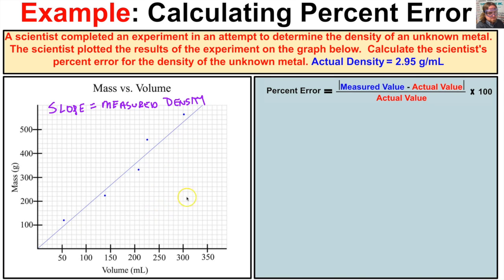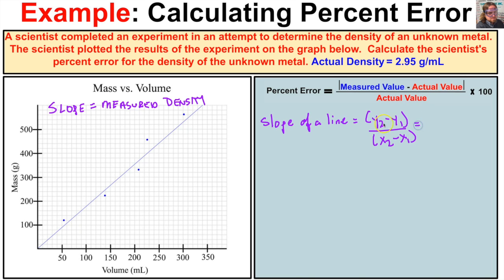So how do we find slope? To get the slope of a line, we take y2 minus y1 all over x2 minus x1, and that gives us the slope. The slope of this line will be the measured density — the measured value we can plug into the percent error formula. To find it, we need to select two points on this line that intersect the graph paper perfectly, so our measurements are accurate.